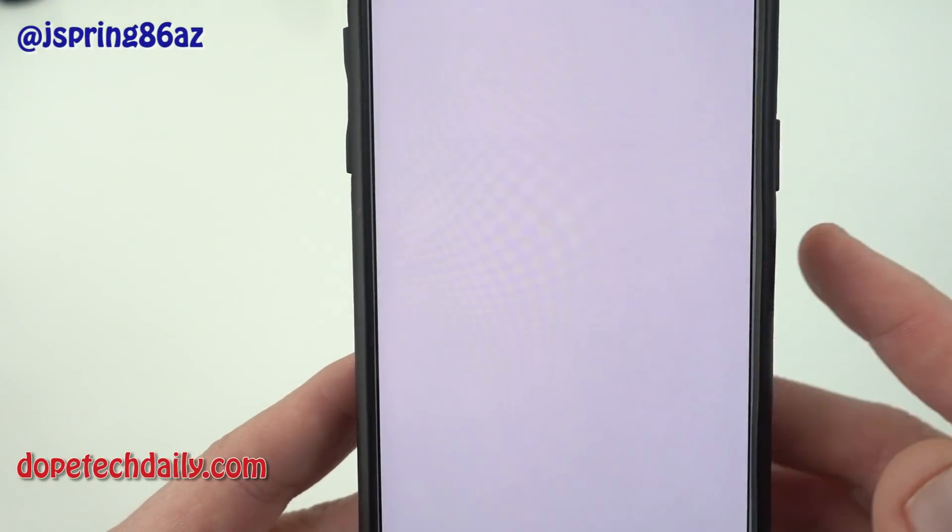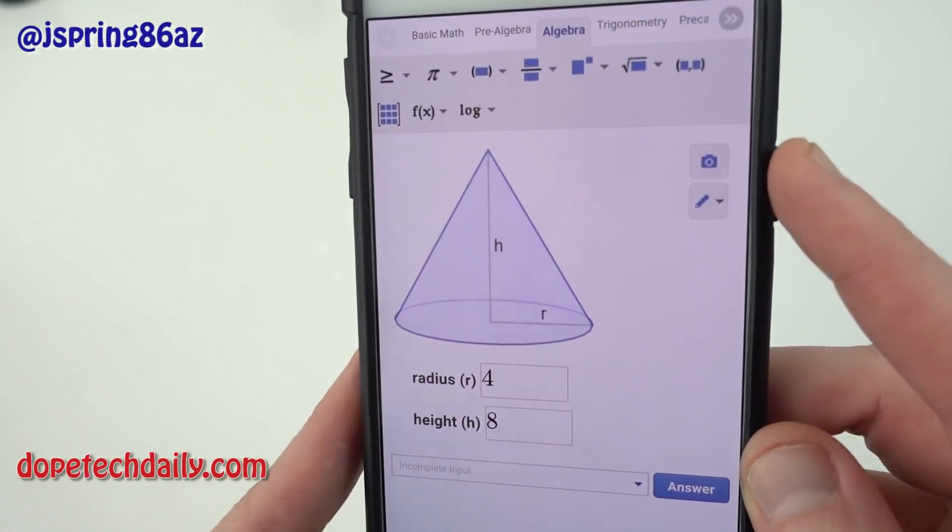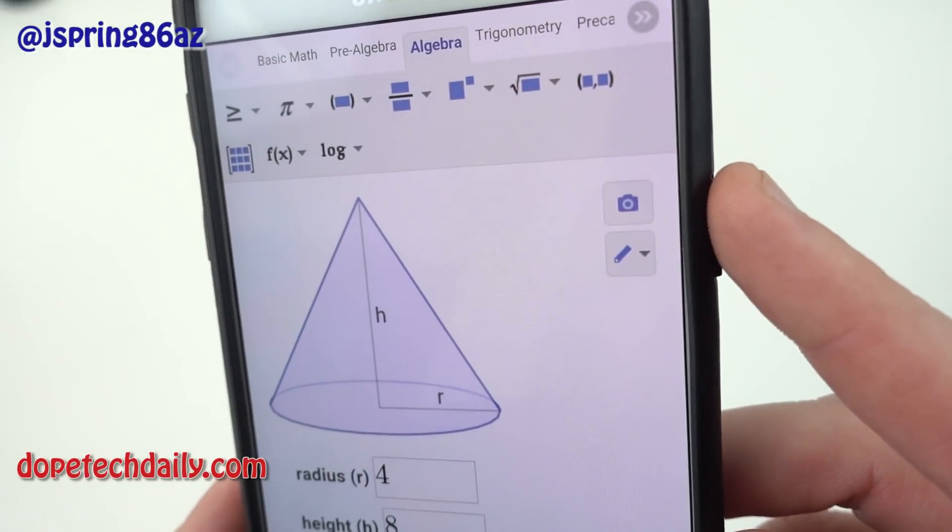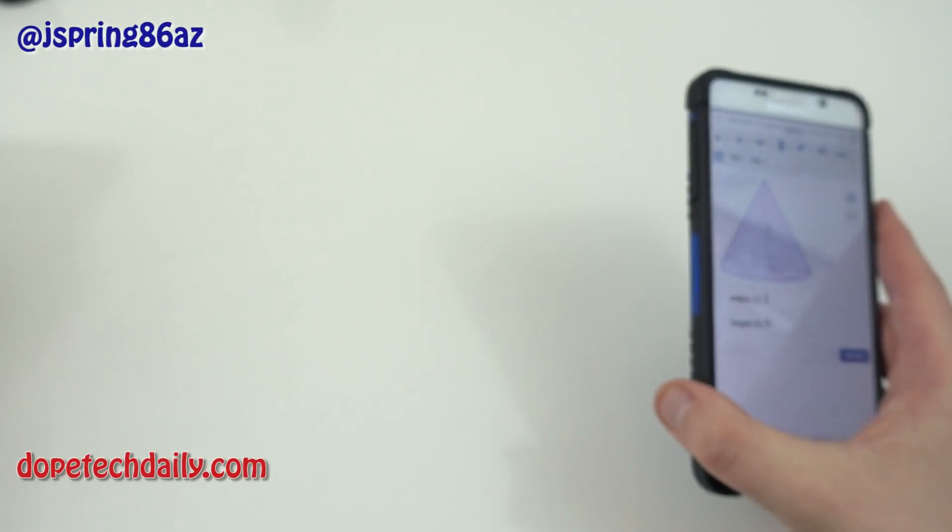Now one other thing I want to show with Mathway is it has a great feature over here on the side where you can take a picture of some mathematics. You see right there the camera icon. You can import the mathematics into your actual problem. So I'll quickly show you how this works.